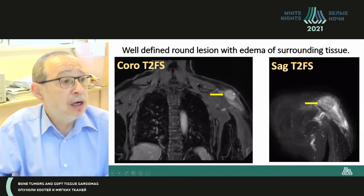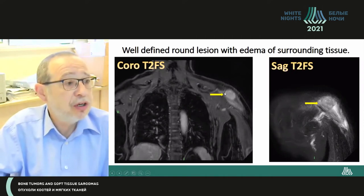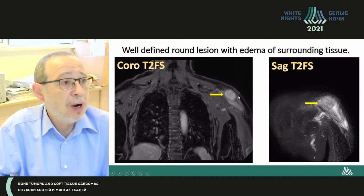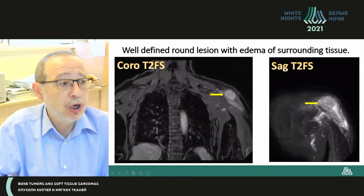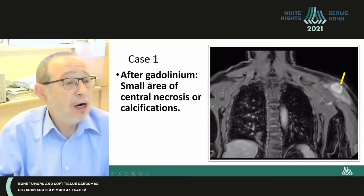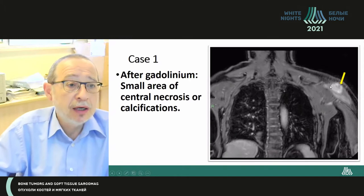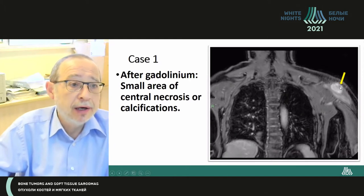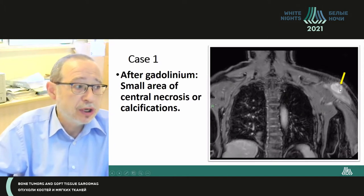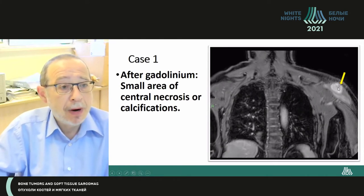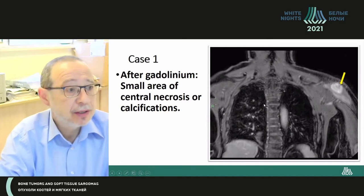This image is a coronal view. You can see a very well-delineated mass which is accompanied with edema of adjacent tissue. After introduction of gadolinium, there is also contrast enhancement of the central necrosis zone and very delicate small calcifications.